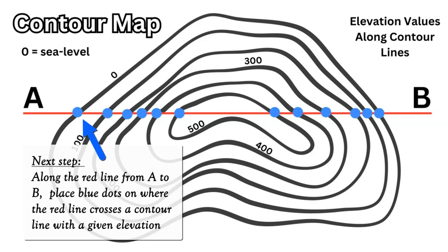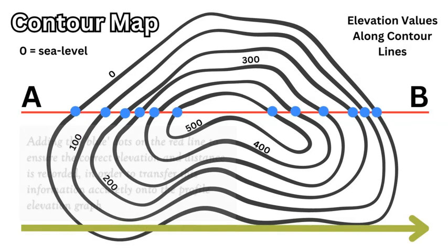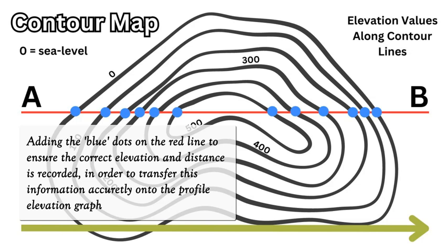When you add the blue dots that cross over each contour line along this linear red line from A to B, you get a sequence of positions and points on your island which are accurate for both elevation, and you can figure out the distance between the dots, which will make it easier to transfer onto your X and Y axis graph.